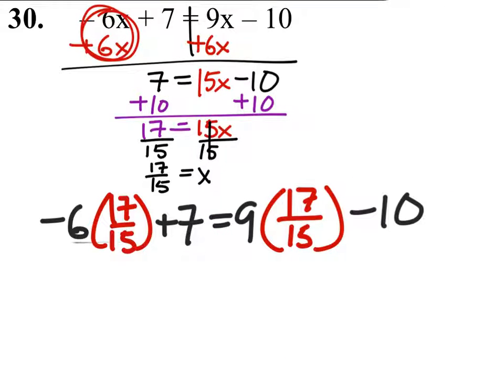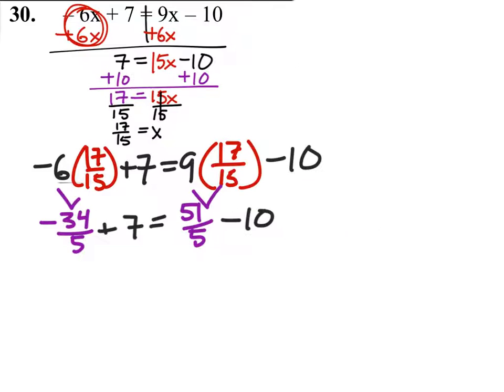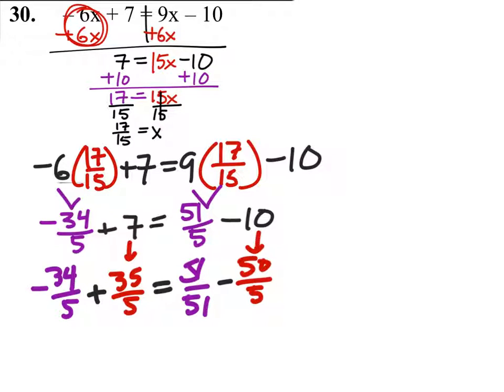Now that we have this written, we simply need to do our multiplications first, which is right here and here. So this is what we have, but we need common denominators, so we'll need to change the 7 and the 10 so they have a denominator of 5. All right, so this is what we have now.